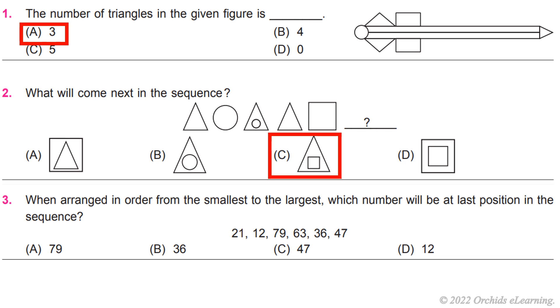Question 3: When arranged in order from the smallest to the largest, which number will be at the last position in the sequence? 21, 12, 79, 63, 36, 47. A) 79.